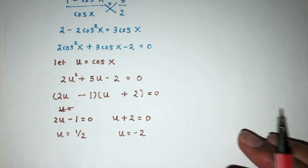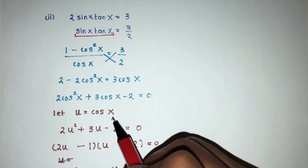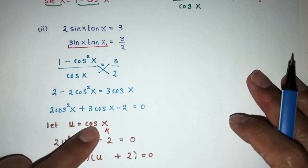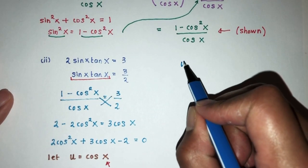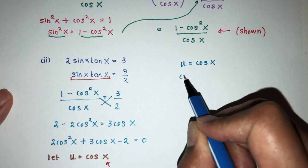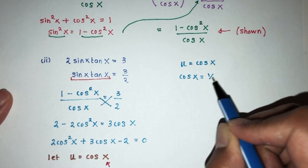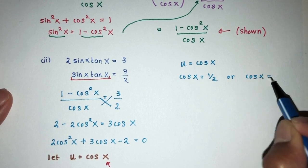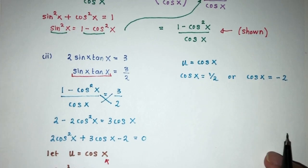But now we realize that we're not trying to find the value of u. We're trying to find the value of x in this question. So we place u back by your main substitution. So here we have, continue, u was found to be cos x, right? Now we know cos x is equal to half, or we can see cos x was found to be minus 2.